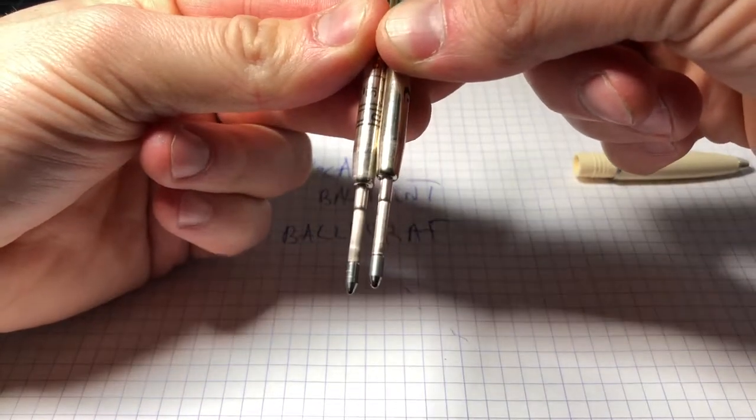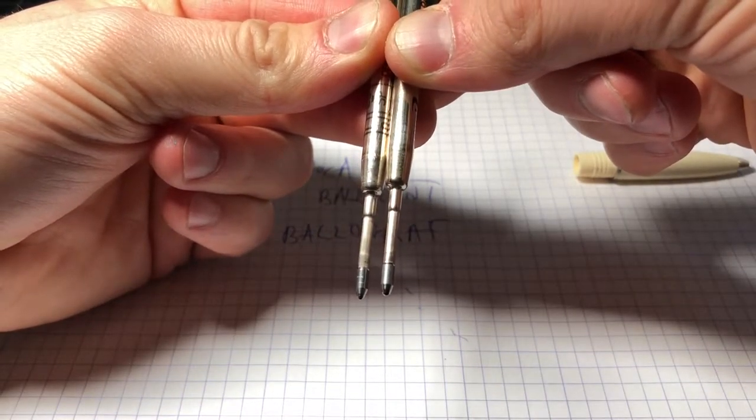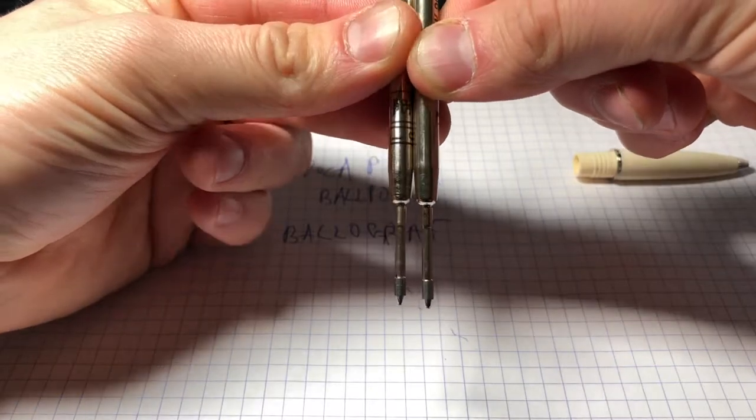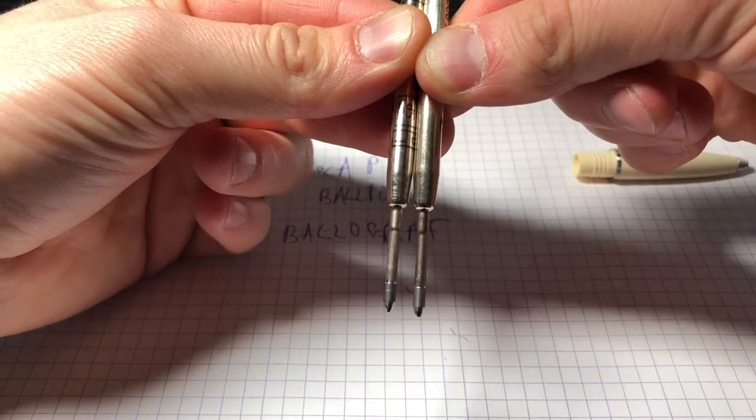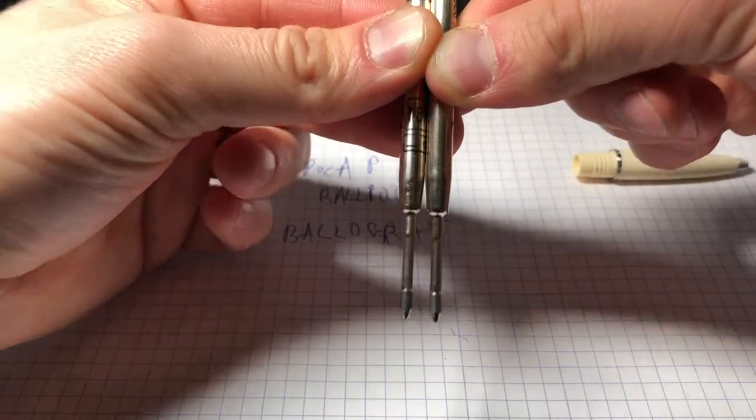The bottom ends, or the business end, is actually fairly similar. Pretty close to identical with the contouring, which is important to make sure the spring works on both of them.